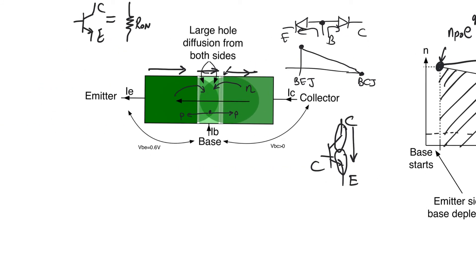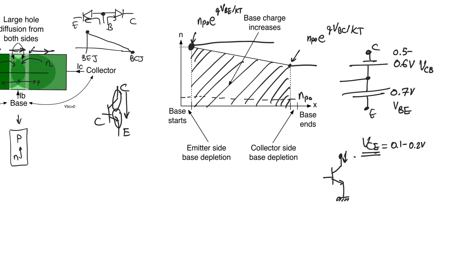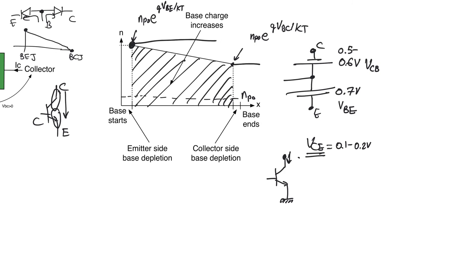If we remove the voltages causing forward bias on the two junctions, the Base is now suffering from excess electrons and wants to go back to P-type. It will do that by recombining with the excess electrons, and that is going to take some time. This time for recombining the excess electrons in the Base is something that affects the speed of BJT gates.